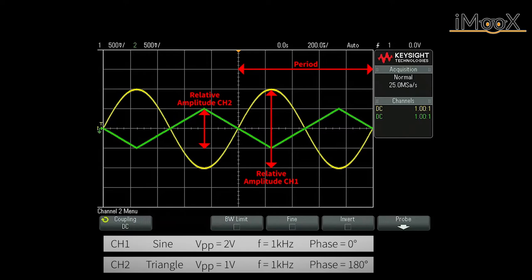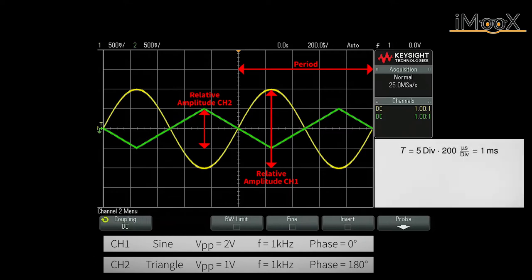In this example, one period is 5 divisions, which gives a period time of 5 times 200 microseconds, and therefore 1 millisecond or a frequency of 1 kilohertz. The peak to peak value for channel 1 is 4 divisions or 2 volts if we calculate it. And for channel 2, there were 2 divisions and therefore 1 volt, and this also fits our previously defined signals.